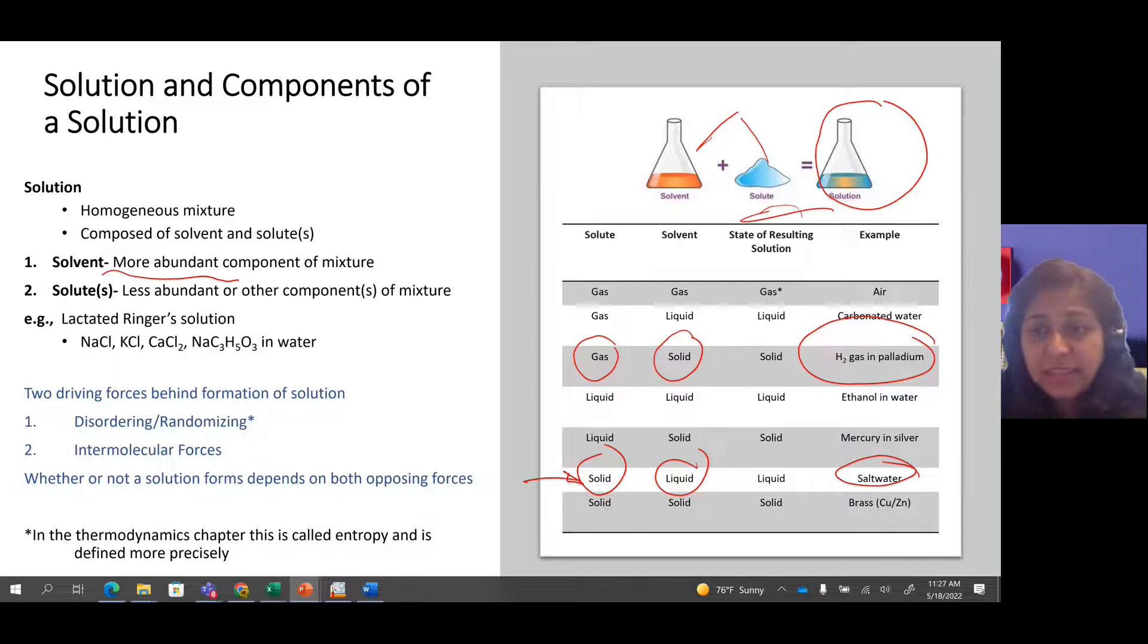We define that as salt water - salt in water, that solution is salt water. Again here, the mercury is the solute, which is actually a liquid, and the silver is the solvent, which is actually a solid. We define that solution as mercury in silver.